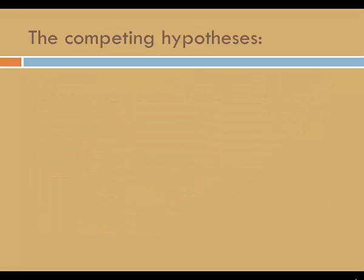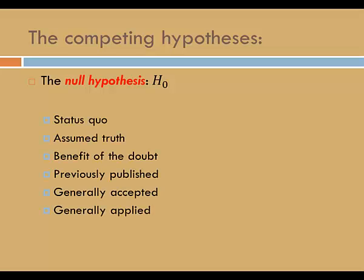In a hypothesis test, there are two competing hypotheses. The first is referred to as the null hypothesis, denoted H₀ — that's H with a subscript of 0. The null hypothesis is the status quo, or the assumed truth. This is the hypothesis that gets the benefit of the doubt. It could be previously published information, a generally accepted truth, or a generally applied value of the parameter.